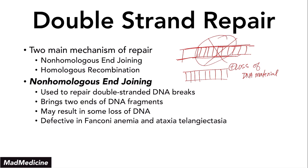Non-homologous end joining is defective in Fanconi anemia and Ataxia telangiectasia. One of the main causes leading to these conditions is errors in non-homologous end joining when repairing DNA. Often, that DNA is already very damaged to begin with, so this mechanism isn't really the best option for our body.